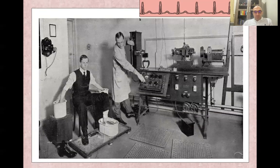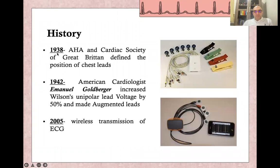This was the first ECG — to perform it, the person sat on a chair and placed both arms and the left leg in a jar of saline. In 1938, the American Heart Association and Cardiac Society of Great Britain defined and started to use the chest leads, defining positions for each chest lead from V1 to V6. In 1942, Emmanuel Goldberger invented the augmented leads by increasing the voltage of unipolar leads by 50%. In 2005, wireless transmission of ECG was introduced.